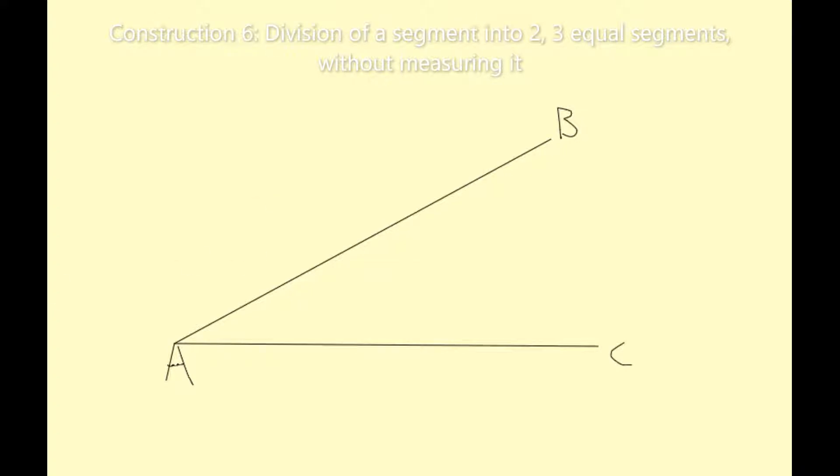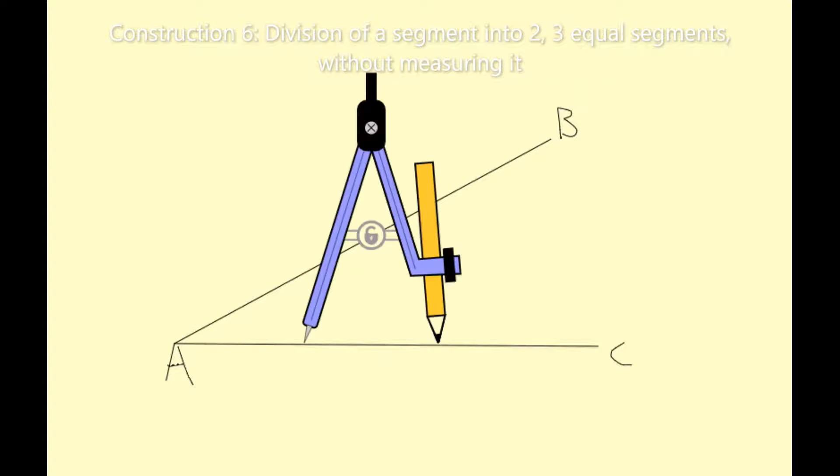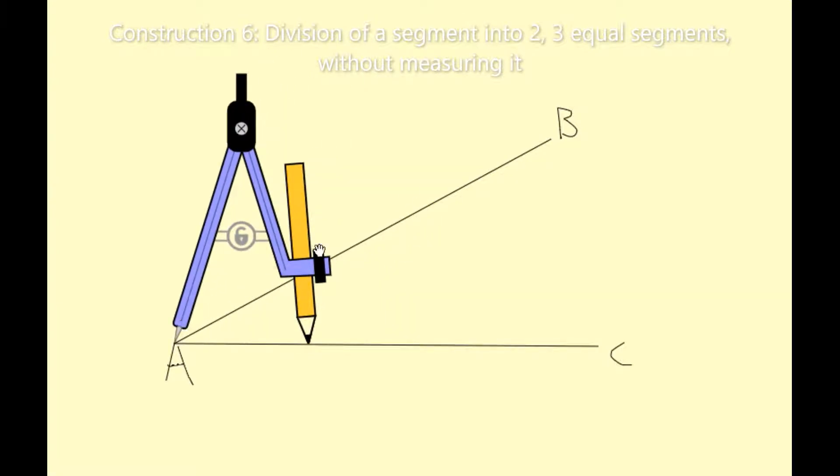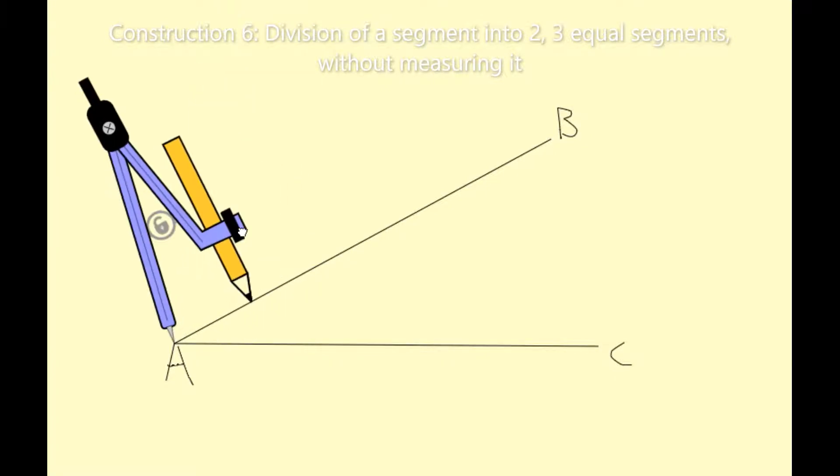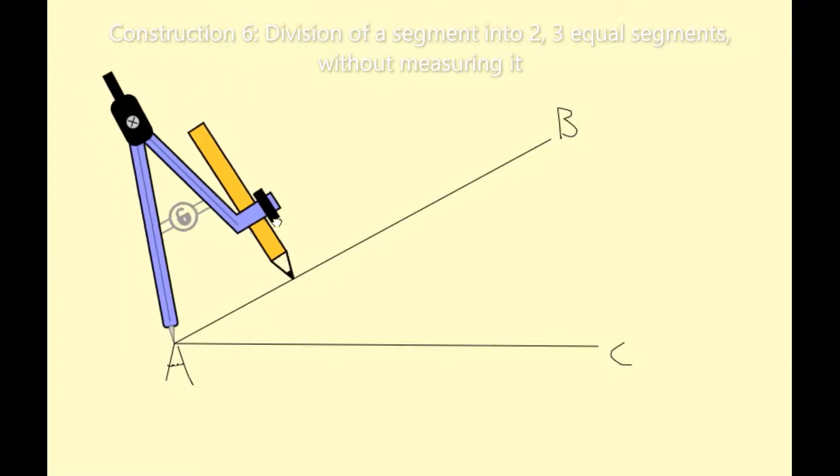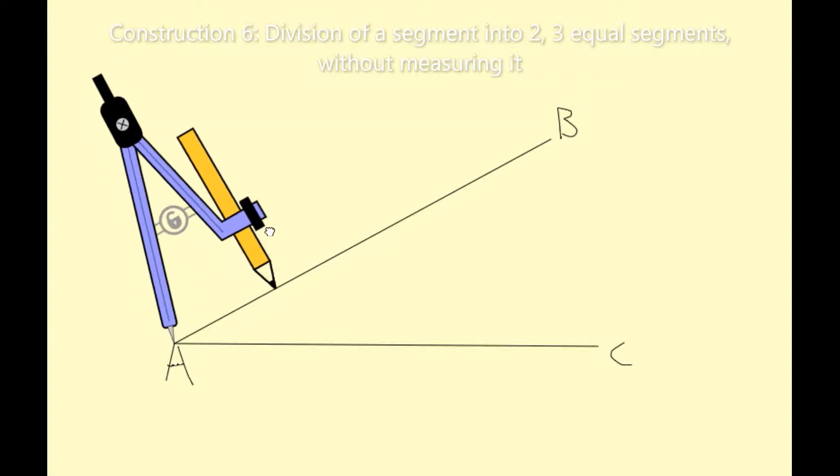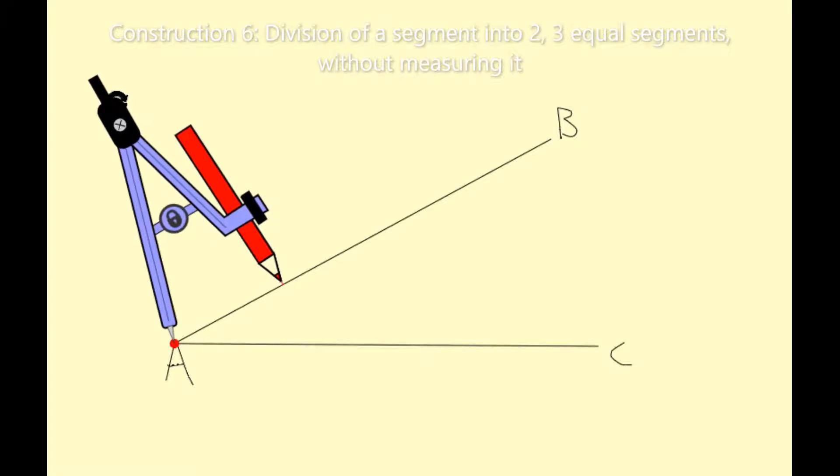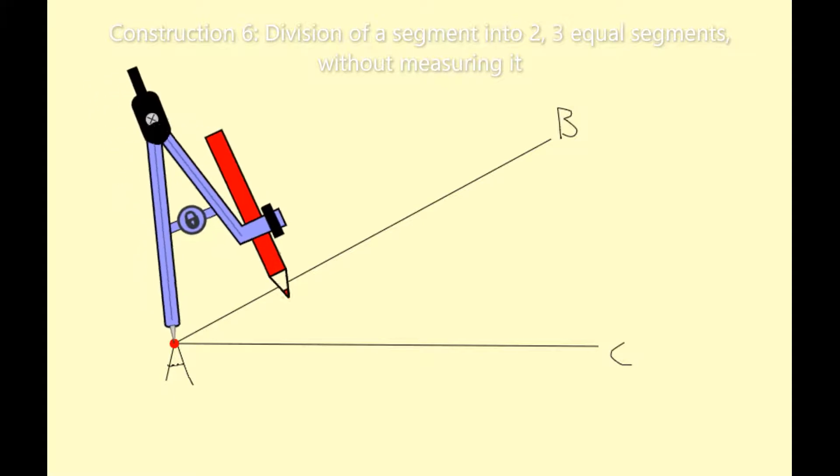I'm now going to take out my compass and mark off equal segments on this line segment AB. Now it doesn't matter the distance of your radius on your compass, we just have to keep them equal. So no matter what you set it at, we must be consistent throughout the whole question. So I've set my radius there now and holding the compass from the top, I'm going to just mark an arc on that line segment AB. You don't have to do a full circle, an arc like that is fine.